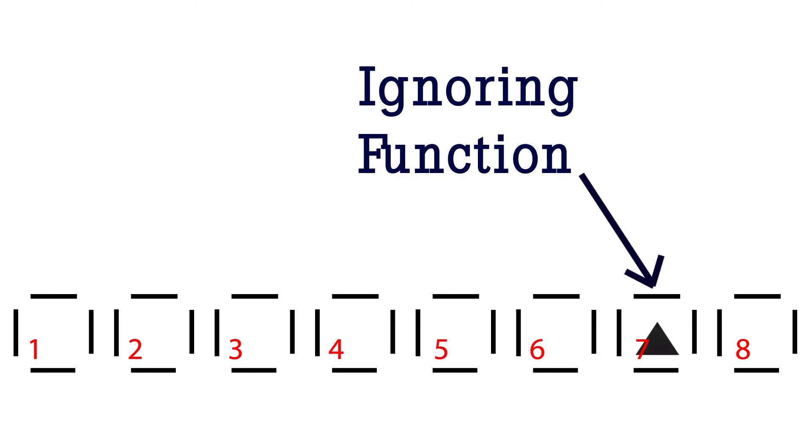The aspect in the ignoring function is also the opposite version of the aspect in the lead. For example, if a type has ignoring extroverted intuition, it means that this type also has lead introverted intuition.